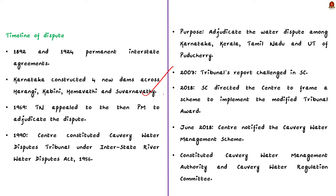There are two interstate agreements signed in 1892 and 1924 on the Kaveri River. The 1892 agreement is a general agreement relating to several interstate rivers, while the 1924 agreement relates specifically to irrigation development in the Kaveri basin. Both agreements are permanent. Later, Karnataka constructed four new dams across the tributaries — Harangi, Kabini, Hemavati, and Suvarnavati — without obtaining prior consent of Tamil Nadu. In 1969, Tamil Nadu appealed to the Prime Minister regarding this unilateral action.